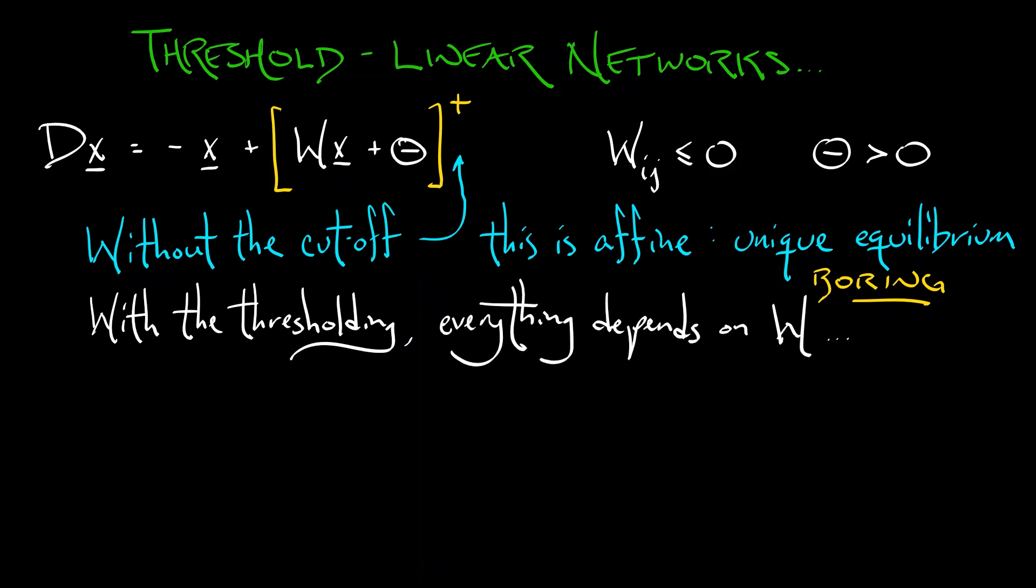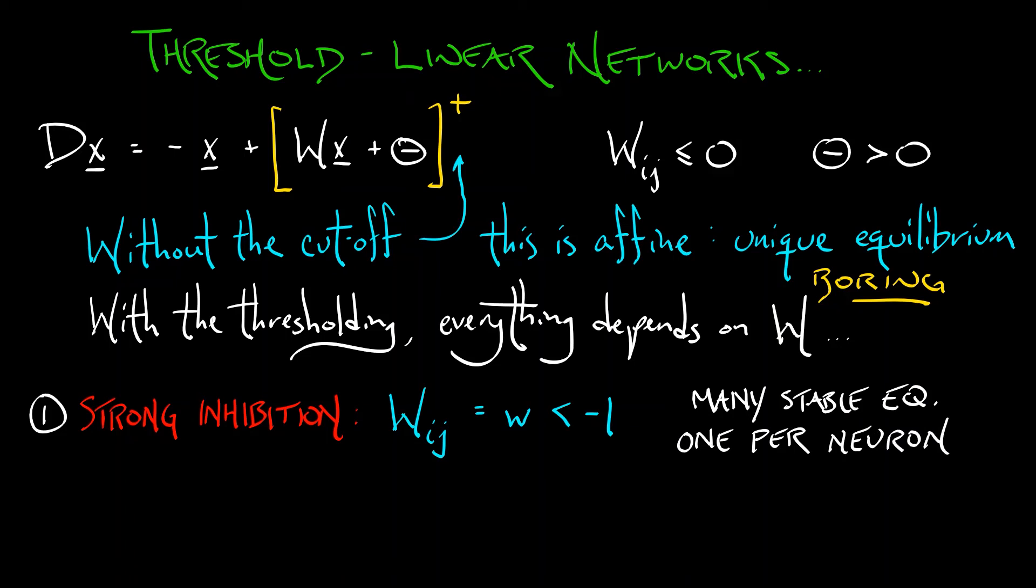Here are a couple of cases. One called strong uniform inhibition. This is where all of the off-diagonal terms, Wij, are equal to a fixed constant that is strictly less than negative one. In this case, one can show that the system has many stable equilibria that correspond to one per neuron. So it's kind of like a winner-take-all situation and it's kind of boring. That's not how neural networks really work.